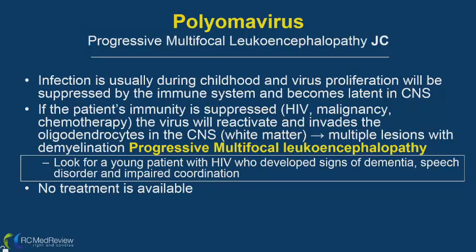Look for a young HIV patient, around 38 years old, presenting with early dementia, white matter problems, impaired coordination, and speech disorder — that's PML. There is no treatment available. Exam questions may ask about the cells affected (oligodendrocytes), the brain part affected (white matter), when infection occurred (childhood), or which patient population (HIV). The virus belongs to the family Papovaviridae.